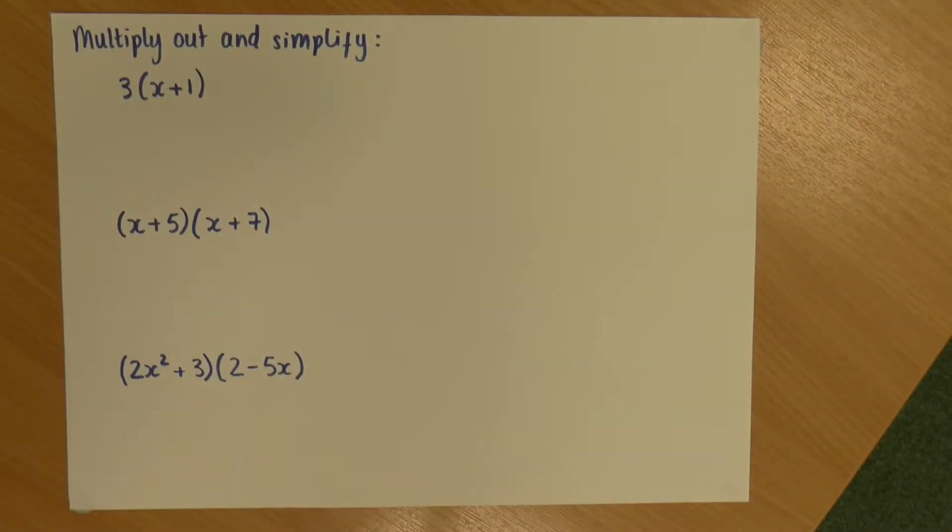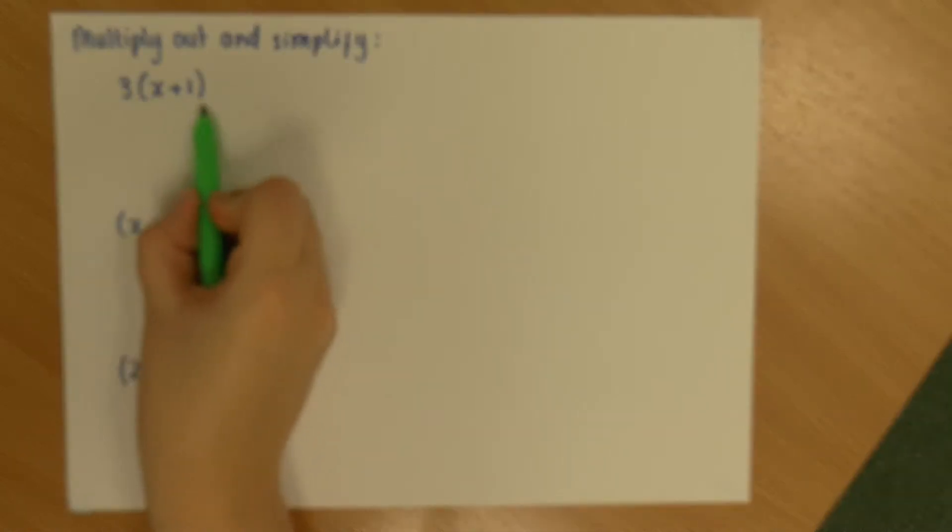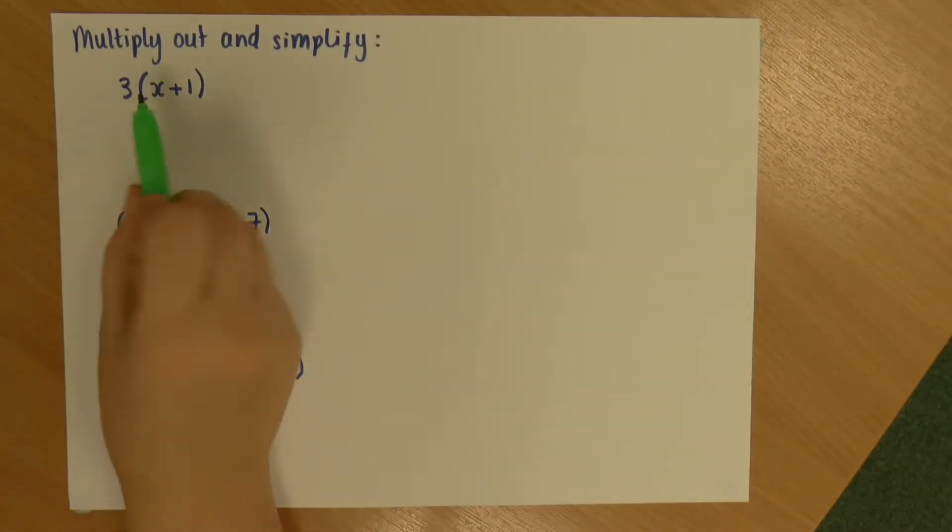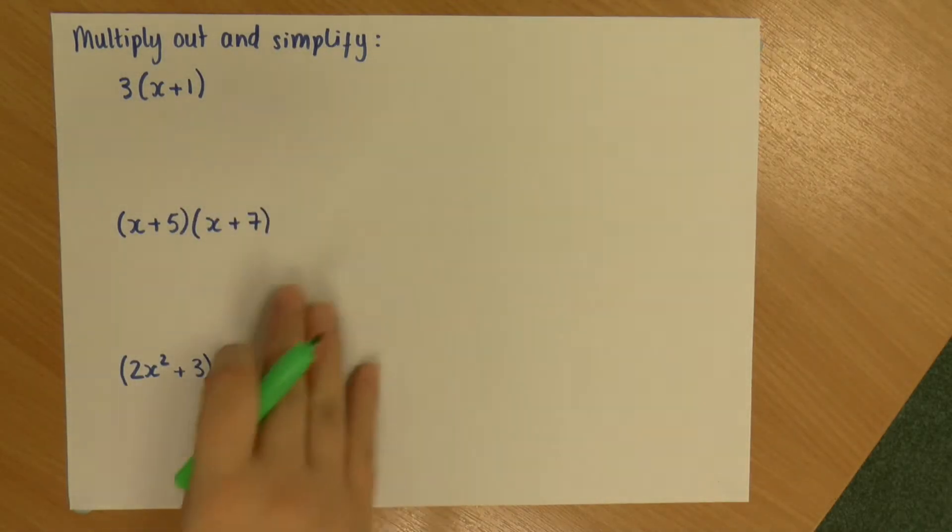So, the first one we've got 3 and then in brackets x plus 1 and we need to multiply these out. The way that I think is probably the easiest way if you're beginning these is something called the box method. So, what I do in the box method is I construct some boxes with the terms on the side and along the top. So, I'll show you what I mean.